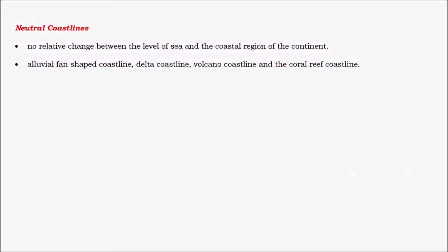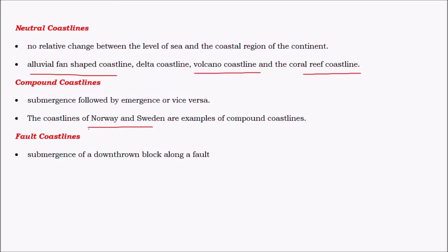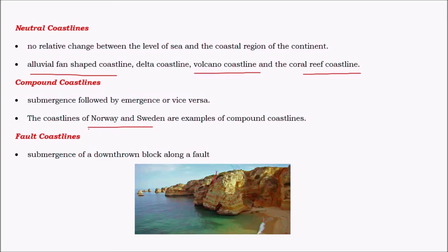Neutral coastlines are ones where both submergence and emergence are completely absent. These give rise to stable regions like deltas, which remain for millions of years. Volcanic coastlines and coral reef coastlines like in Australia are also examples. Compound coastlines are where both submergence and emergence take place, mostly found along the coasts of Norway and Sweden. Fault coastlines are very rare, formed where a block is upthrusted or undergoes subsidence, and a neighboring block subsides to give rise to a fault coast.